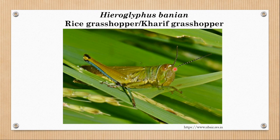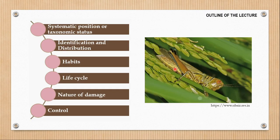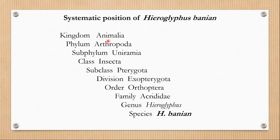We will discuss its biology and we will see how it damages rice. Like we do for all pests, we will talk about its systematic position or taxonomic status, identification and distribution, habits, life cycle, nature of damage and control. So let's start with systematic position or taxonomic status.